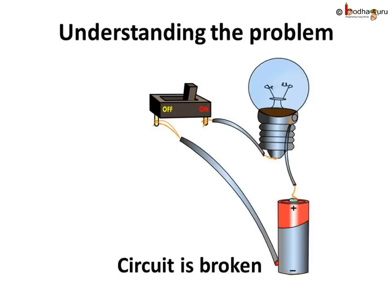Now, place the switch in the off position. Replace the working bulb with the damaged bulb and switch it on. Obviously, the bulb won't glow, and there is a reason for it. We all know when a circuit gets broken, the current cannot flow through it. Here, with the broken filament, there is no complete path for the current to flow and hence the bulb doesn't glow. So now we know the electric current doesn't flow through the broken filament anymore to make it glow.